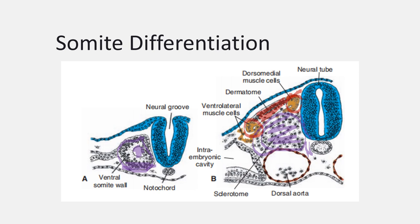Cells at the dorsomedial and ventrolateral edges of the upper regions of the somite will form precursors of the muscles.